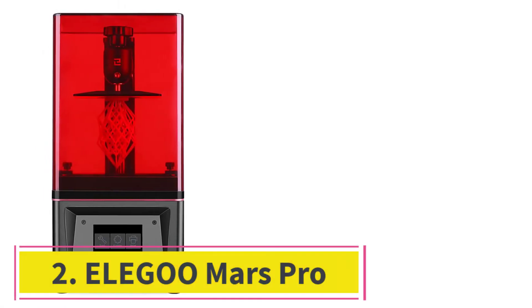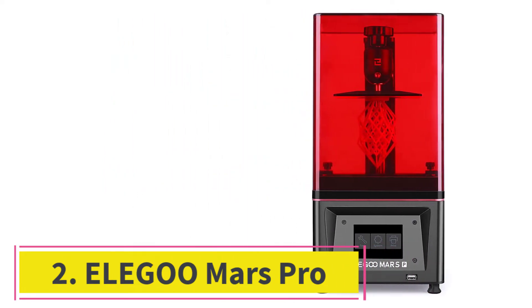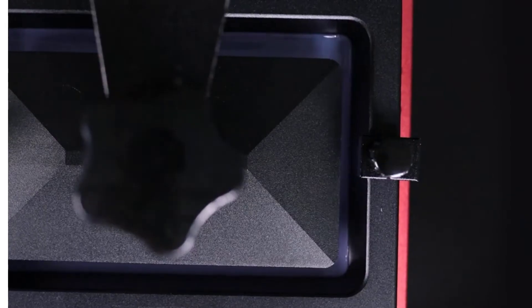At number 2, Elegoo Mars Pro. Mars Pro includes a silicone rubber seal designed to avoid leaking of resin odor and keep it inside the print area.